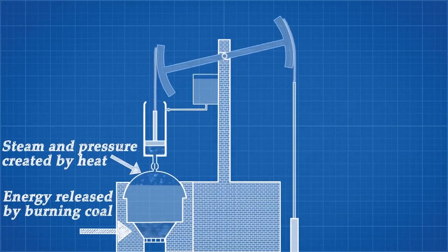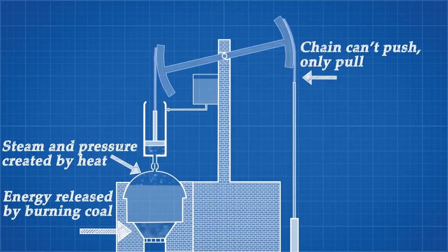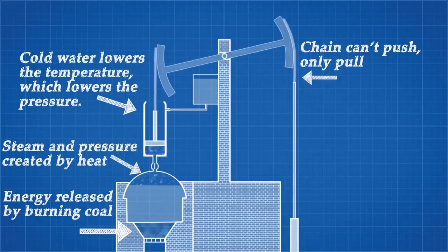No mechanical work occurs on this stroke, because this chain can only transmit force in tension. The power stroke occurs when cold water is sprayed into the cylinder. This lowers the temperature, causing the pressure to drop. Atmospheric pressure now pushes the piston back down.